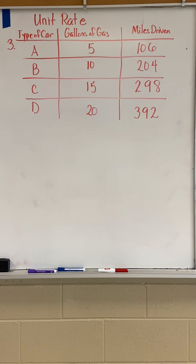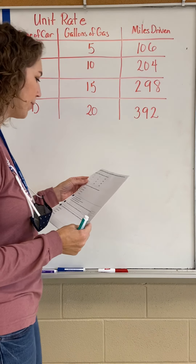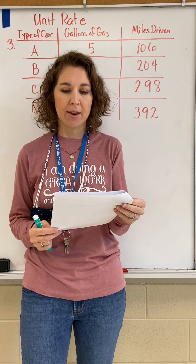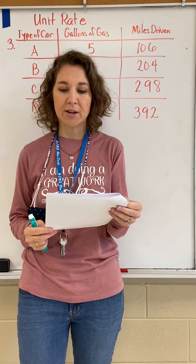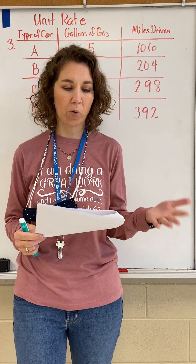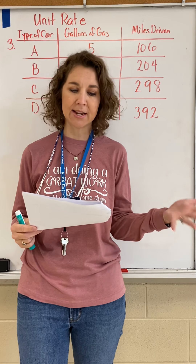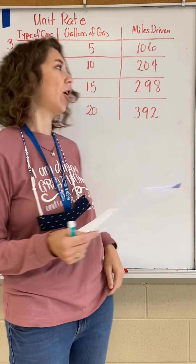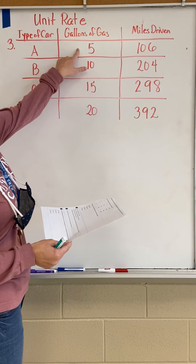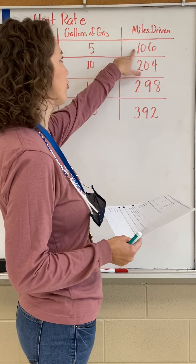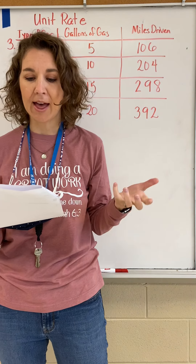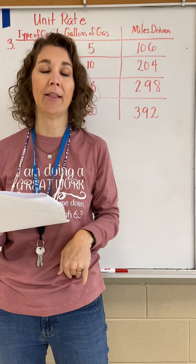On our unit rate review, this is number three. It says the table below shows the number of gallons of gasoline used and miles driven for different types of cars. We've got four types of cars: type A, B, C, and D. The chart tells us how many gallons of gas and how far each car could drive. The question asks us which type of car had the highest number of miles per gallon.